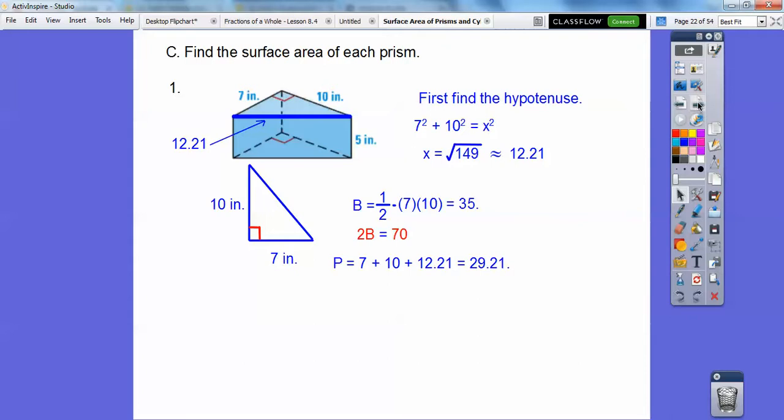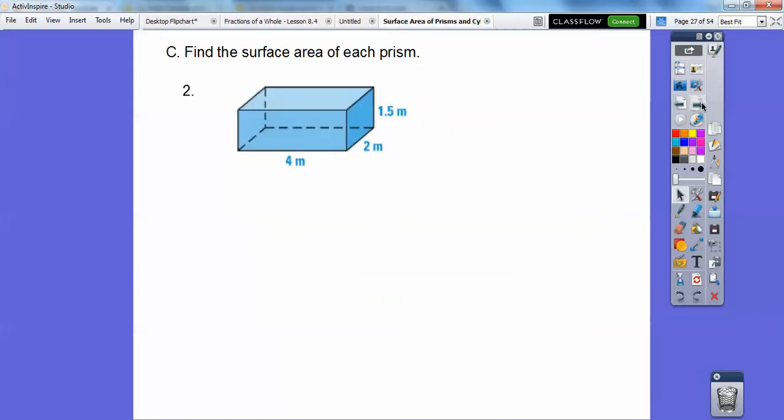The perimeter of the base is, this is the base, so 7 plus 10 plus 12.21, so 29.21. The h is 5. So pH is going to be 29.21 times 5 is 146.05. So there's our surface area. Don't forget, it's always in square units. So 216.05 inches squared.